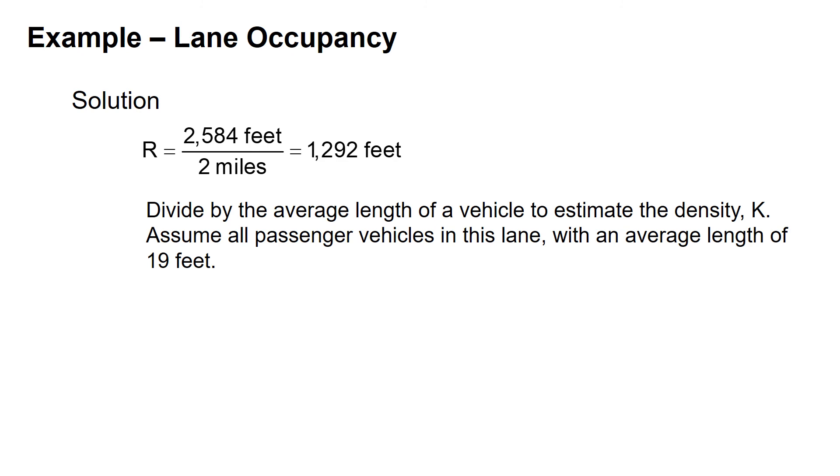We need to divide by the average length of a vehicle to estimate the density K. For this example, I'll assume all vehicles in this lane are passenger vehicles with an average length of 19 feet. So R equals 1,292 feet divided by 19 feet per vehicle, which gives us a density of 68 vehicles per mile per lane. That is answer C.